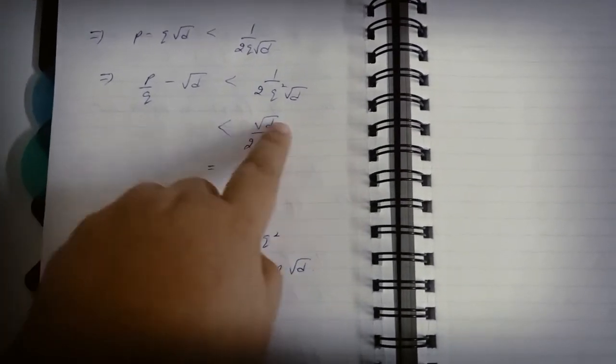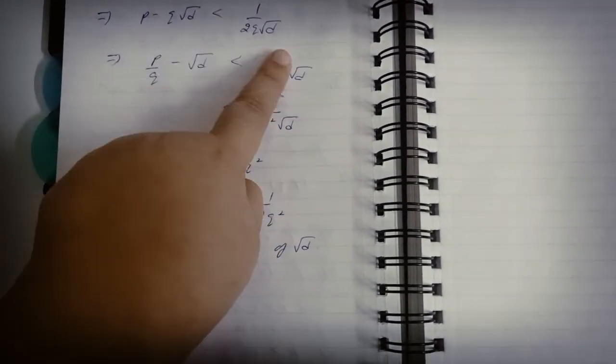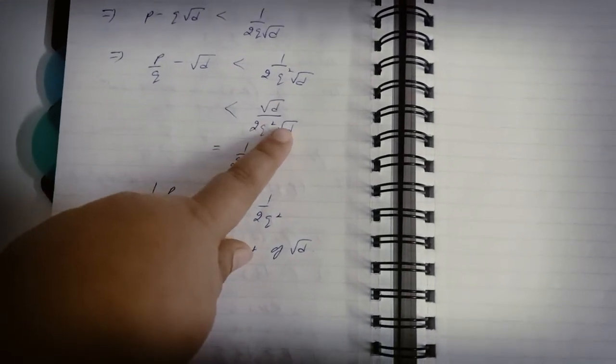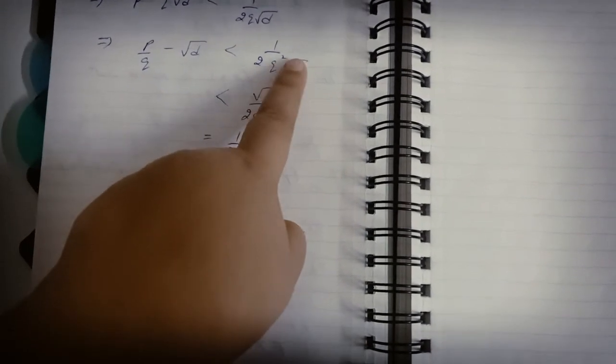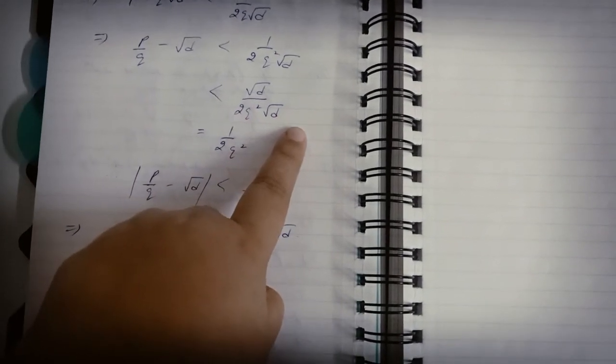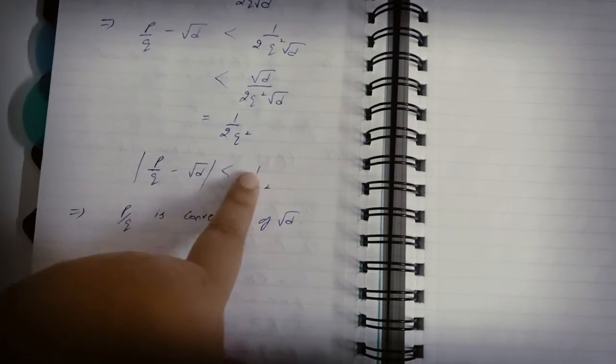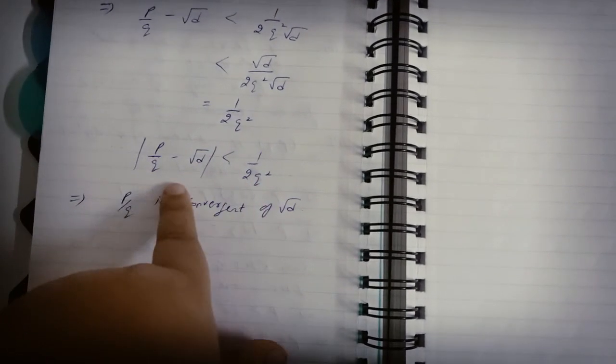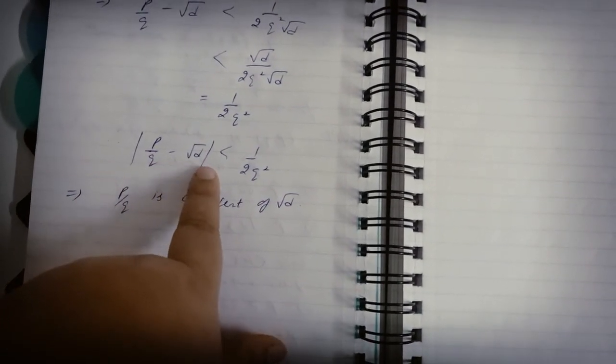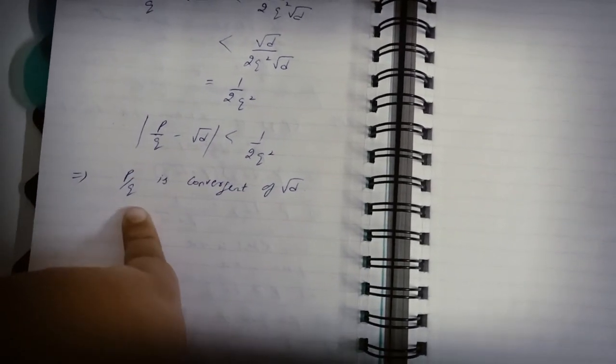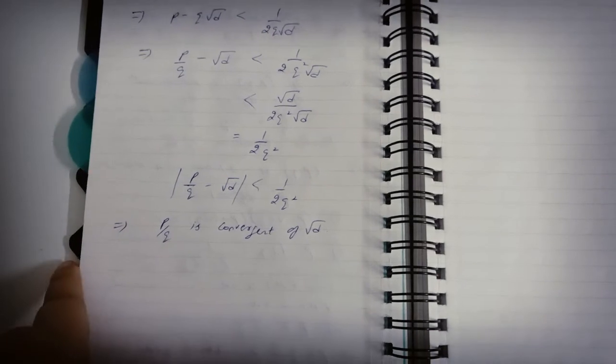So if I divide this equation by q, then p/q - √d < 1/(2q²√d). Again since d is positive, this number will be less than √d/(2q²·d), so √d/√d cancels. This is 1/(2q²). So it means this number |p/q - √d| is less than 1/(2q²), so it means this is some convergent of √d by the theorems in infinite expansions.